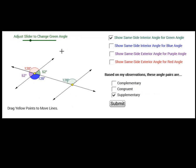This applet shows same side interior and exterior angles. So you can see here, this green angle goes with this green one. And they're same side interior angles. Well, they're definitely not congruent. You can see that 52 degrees is a lot smaller than 128.